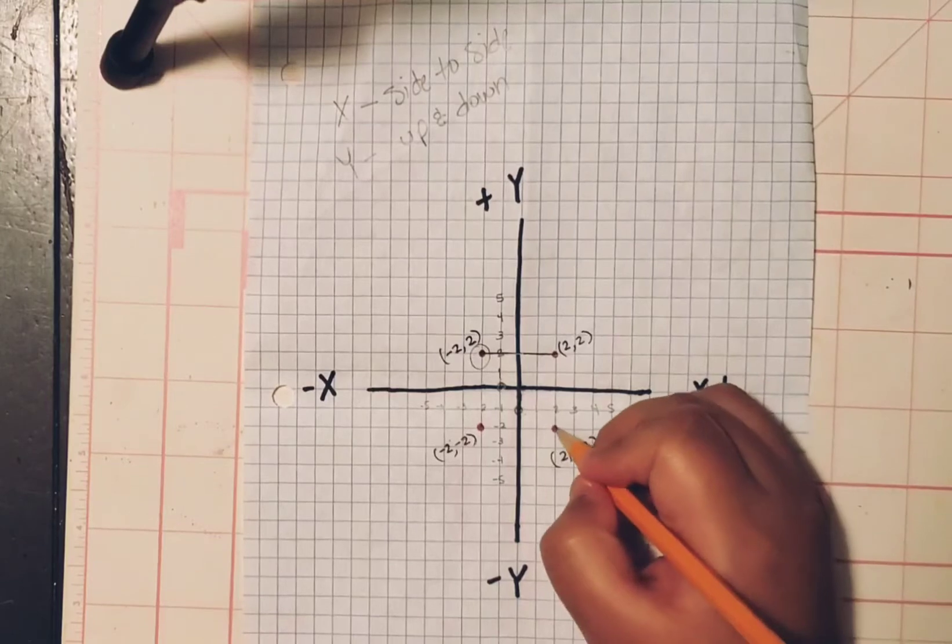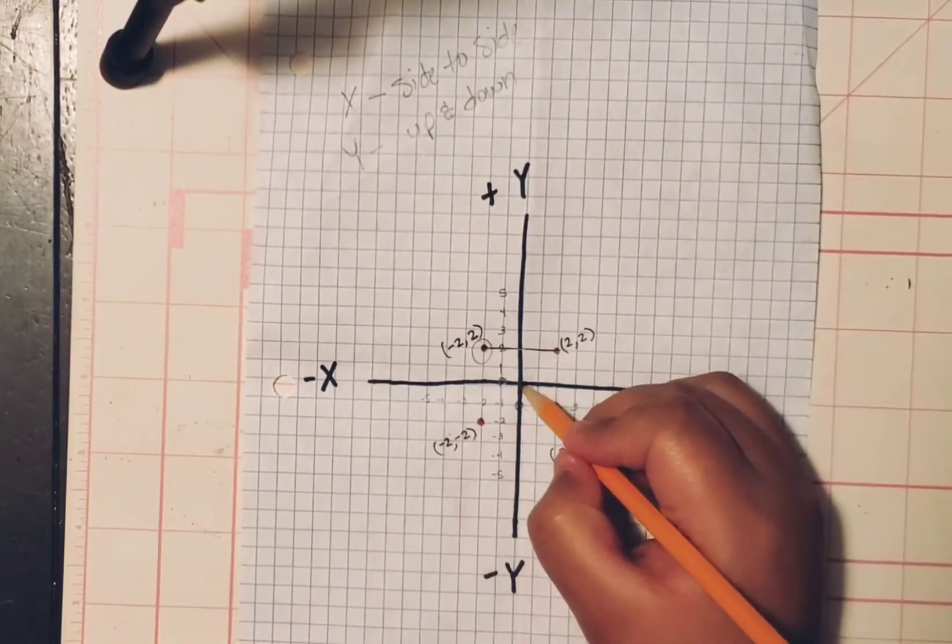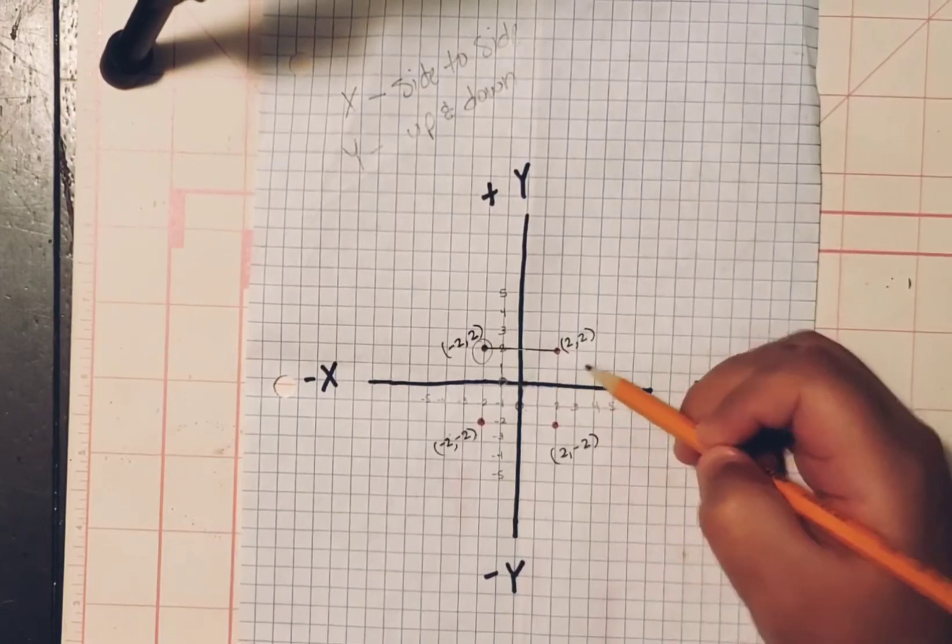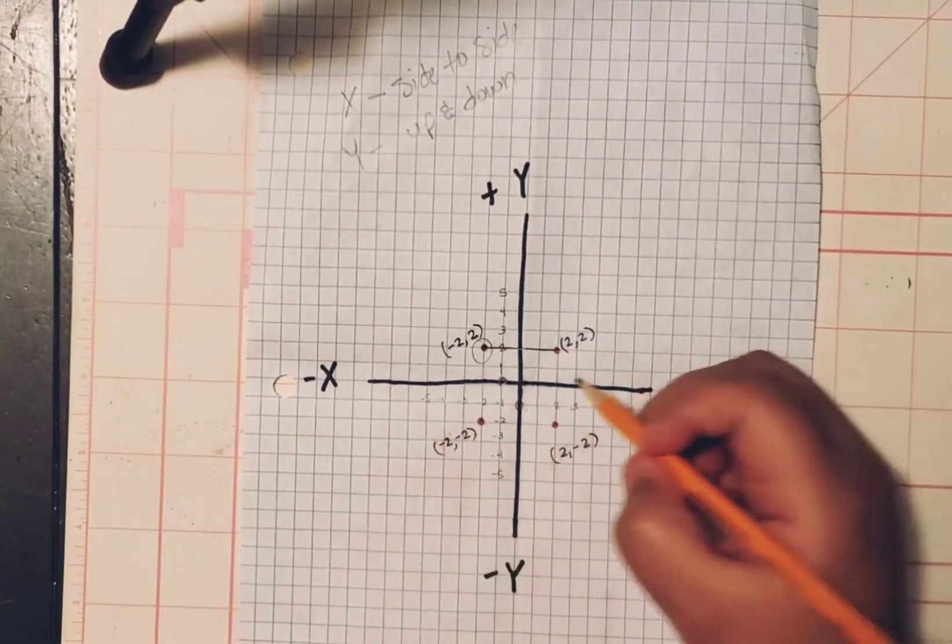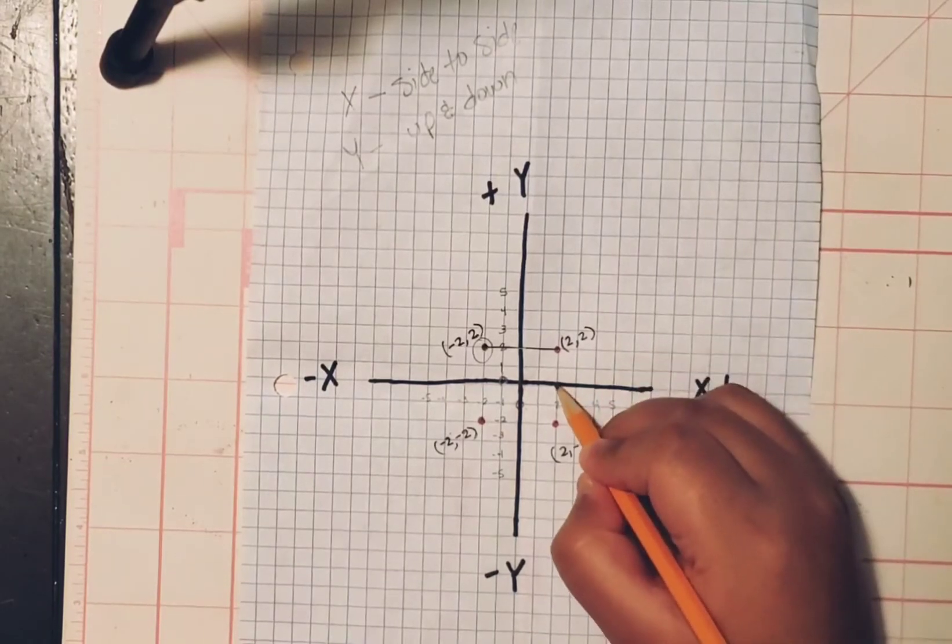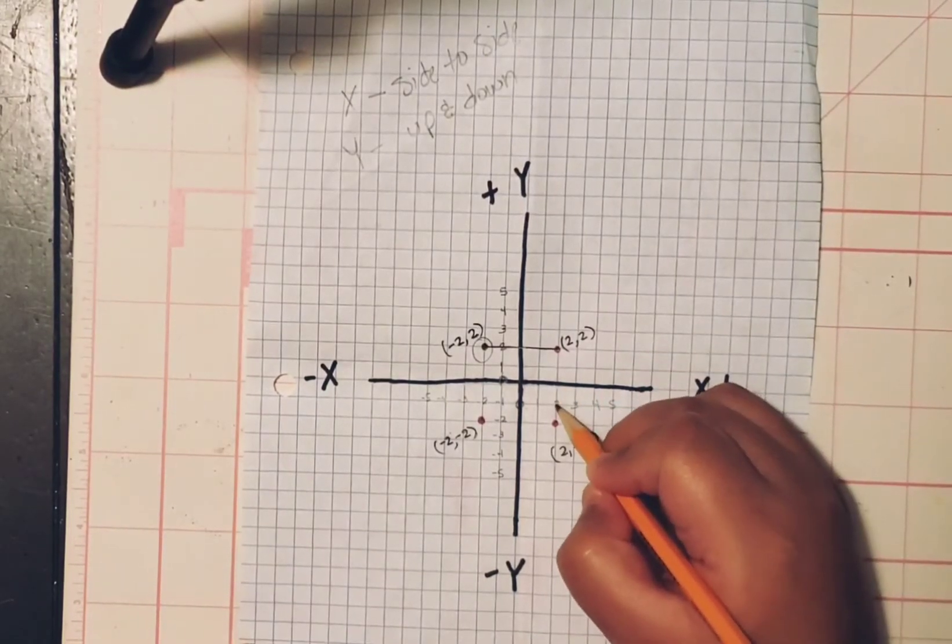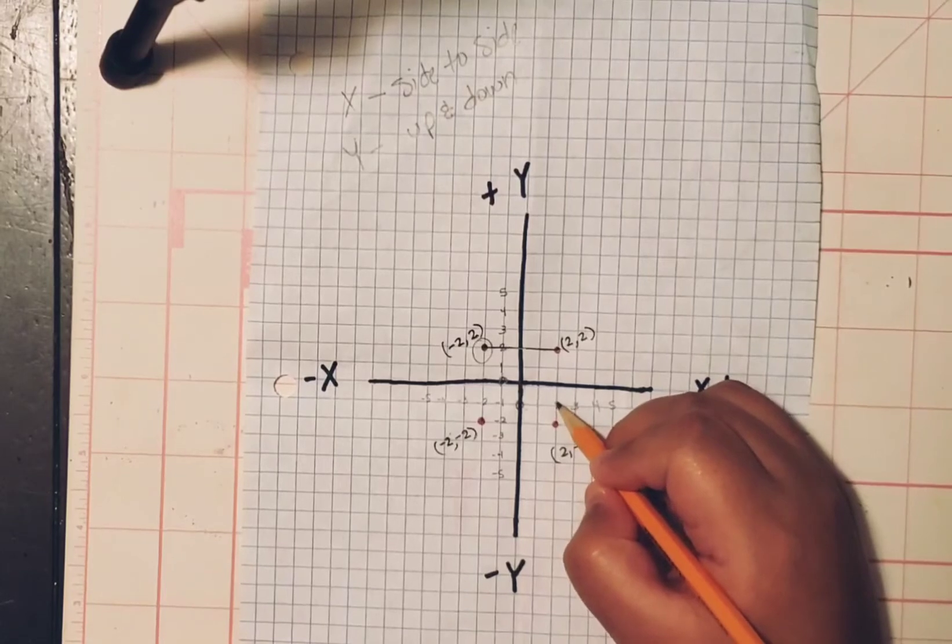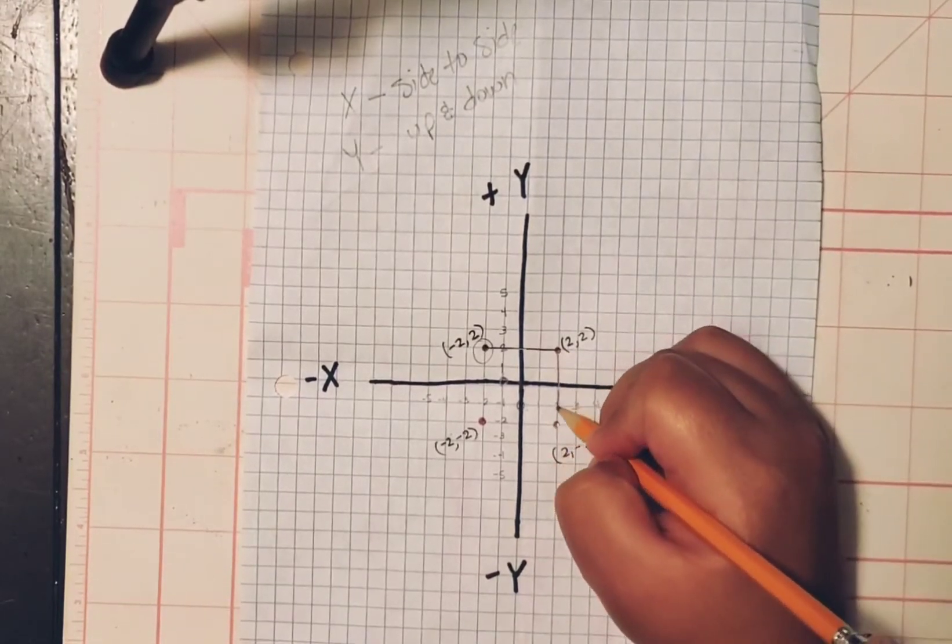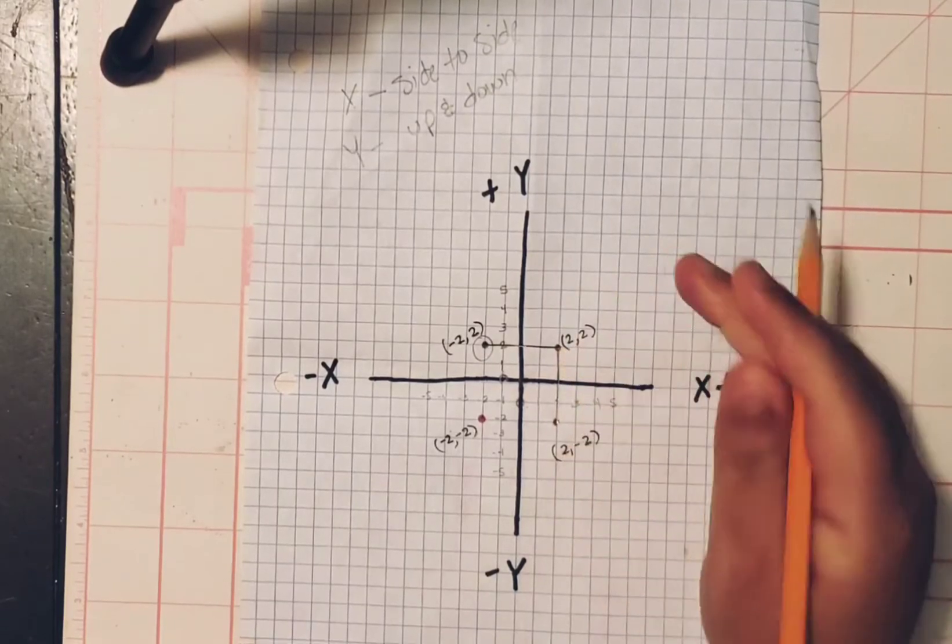And here, we're going to plot this one right here. So we're going to move from zero, one, two. Always working with your X line. Two to the right, which is a positive. And then we're going to go down two. One, this one. One, two. We're going to plot it right there.